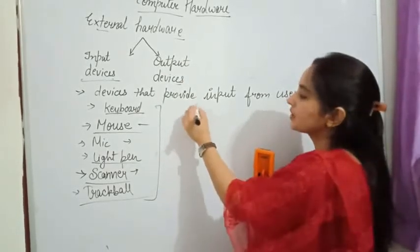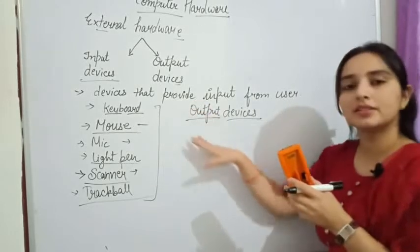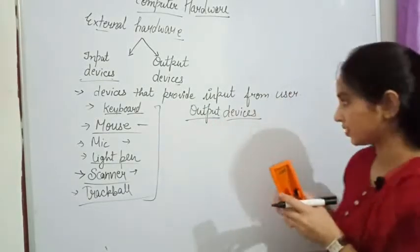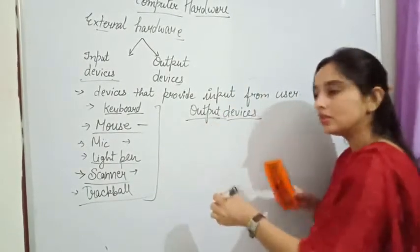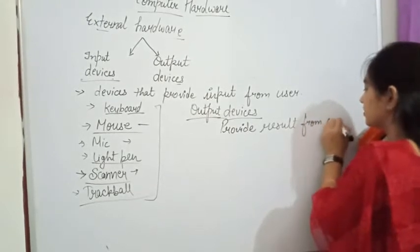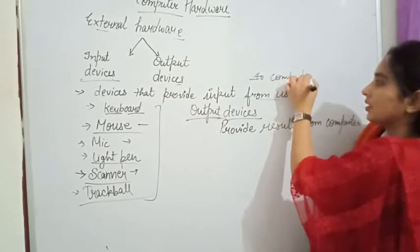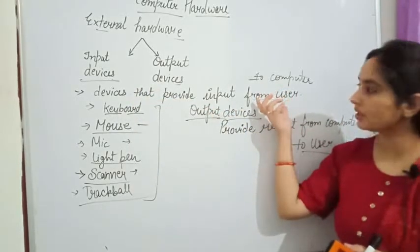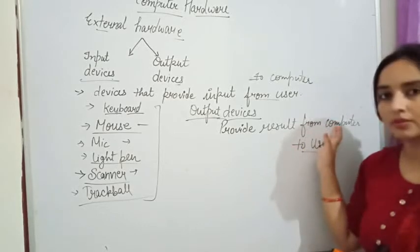Next we have output devices. As the name suggests, output means result. Output devices display the result from the computer to the user. Input devices take input from the user and provide it to the computer system, while output devices take processed information from the computer and provide the result to the user.